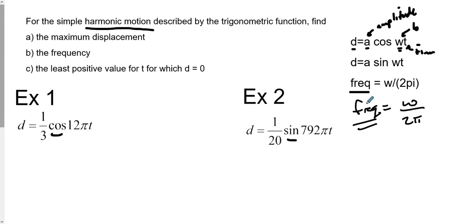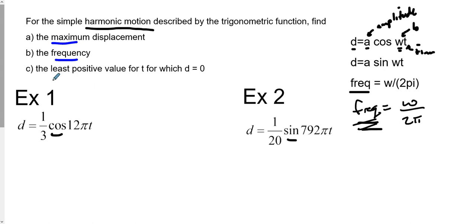The frequency of a harmonic motion is W (our B value) divided by 2π. Using this information, from each harmonic motion problem we want to find three things: the maximum displacement, the frequency, and the least possible value for T — the time for which D, the distance, equals zero.